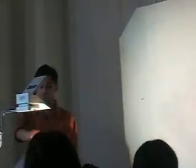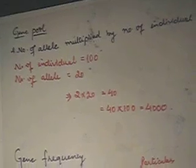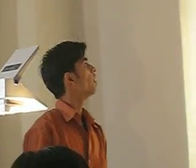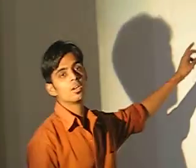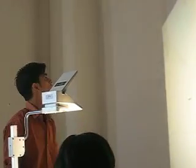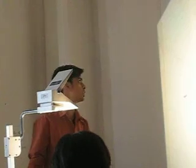The formula for gene pool is: number of genes multiplied by the number of individuals. If we have 100 individuals and each individual has 20 genes, then we multiply 2 by 20 to get 40, and 40 multiplied by 100 gives 4000. That is the gene pool.